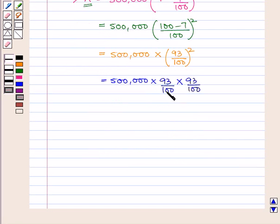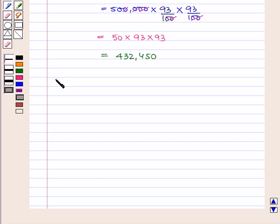Now, after cancelling all the zeros, we will obtain 50 into 93 into 93 which is equal to 432,450.